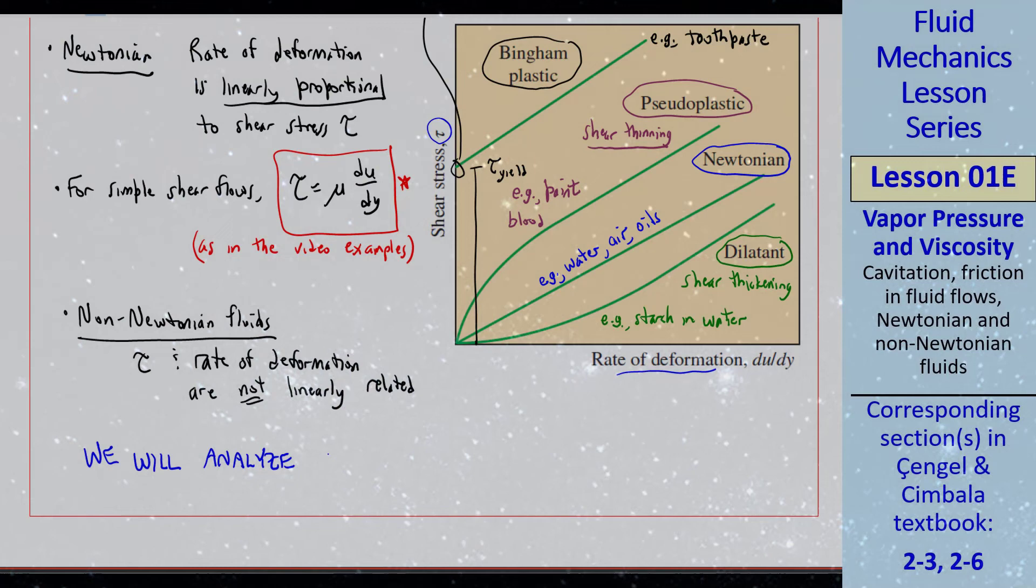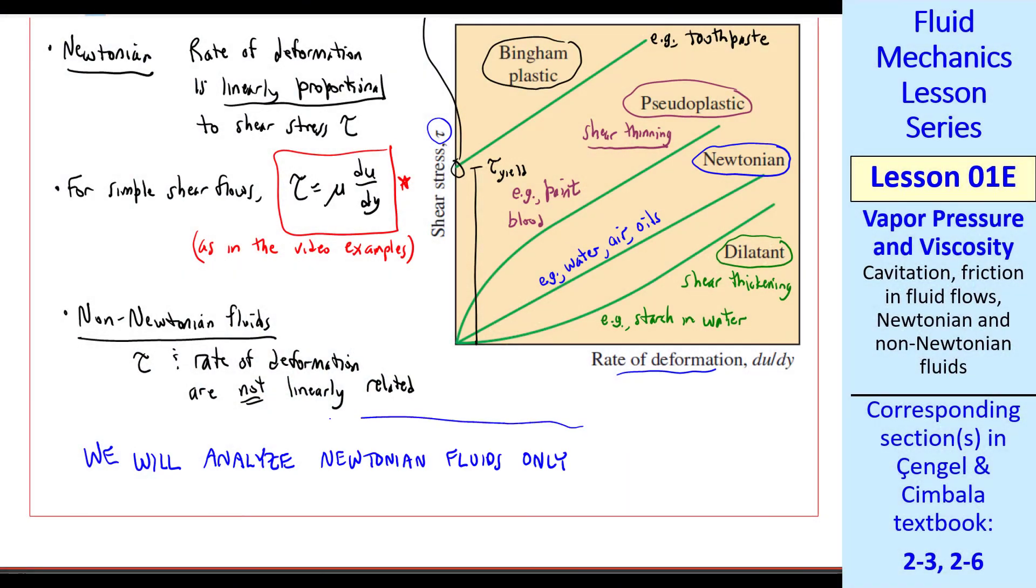You can have a finite shear stress, and the toothpaste doesn't flow, even upside down. Once you exceed a certain shear stress, it starts flowing like a fluid. This is definitely a non-Newtonian fluid. We will analyze Newtonian fluids only in this course, but you should be aware of these other kinds of non-Newtonian fluids.